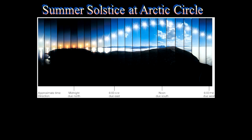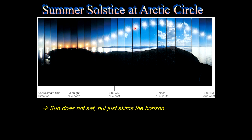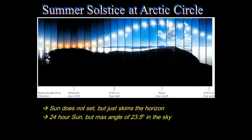The Arctic Circle is located at 66.5 degrees north latitude, which is 23.5 degrees from the north celestial pole. At the summer solstice, the sun doesn't set — it sweeps down, just skims the horizon, then rises back up to a maximum elevation of 23.5 degrees. This is the furthest south location where the sun on the solstice day doesn't set — 24-hour sunlight for one day. A very special place.